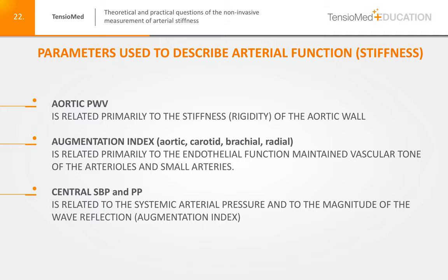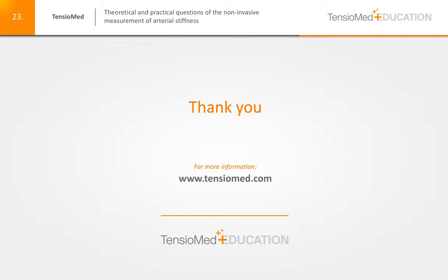Summarizing the parameters used to describe arterial function and arterial stiffness: the aortic pulse wave velocity is basically related to the characteristics of the aortic wall — the stiffer and more rigid the aortic wall, the higher the pulse wave velocity. The augmentation index is mainly related to endothelial function-maintained vascular tone and vascular resistance of the small arteries and arterioles. The central systolic blood pressure and central pulse pressure are a mixture, being related partly to systemic arterial pressure and also to the magnitude of the second systolic wave reflection amplitude — essentially, to the augmentation index. Thank you for your attention.